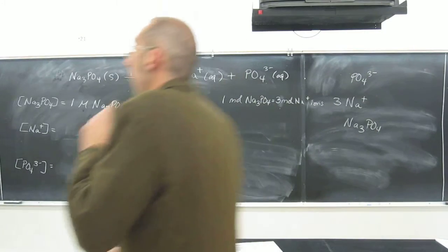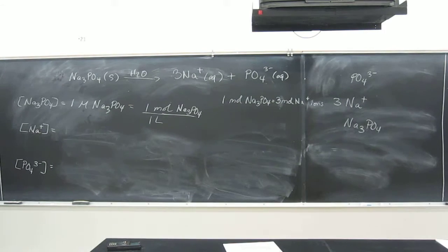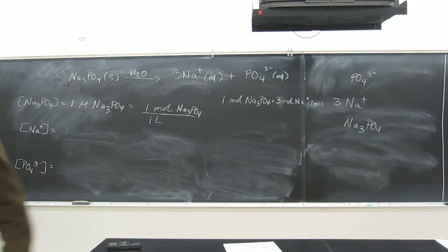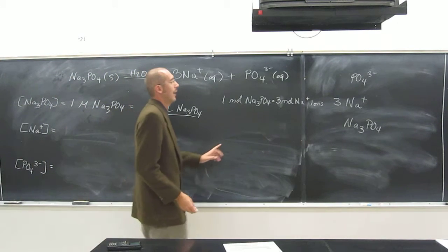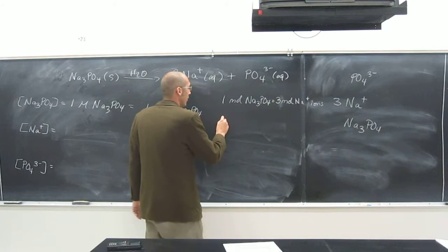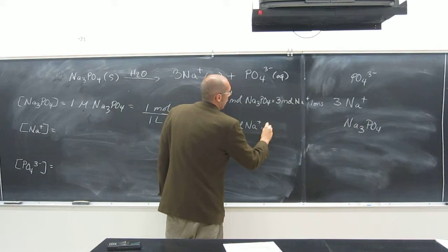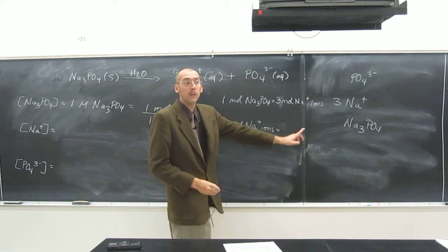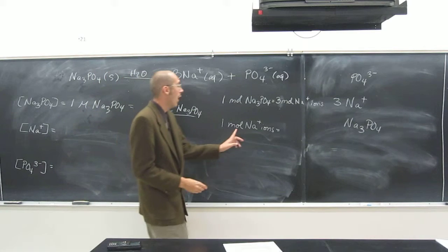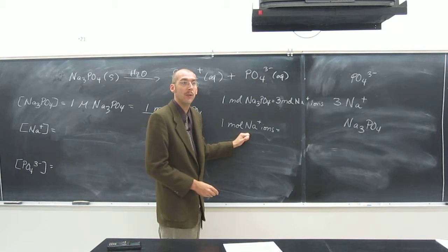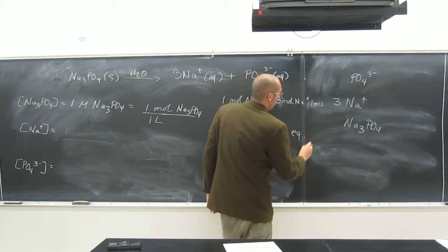So let's do that same problem now, but instead of figuring out the molarity of the two ions, we'll figure out the equivalents per liter of the two ions. Equivalents is the same thing as moles, but it's moles of charge. So if we think about our ions — when we say we have one mole of sodium ions, that means we have one equivalent of charge, because sodium only has one charge per ion.